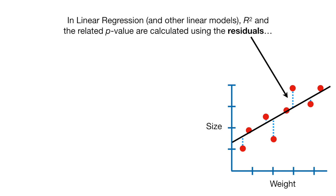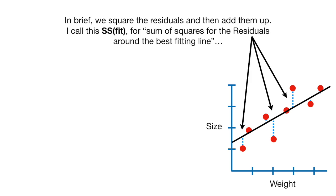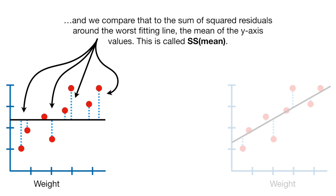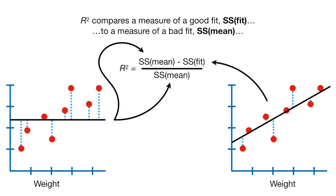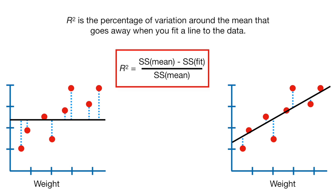In linear regression and other linear models, R squared and the related p-value are calculated using the residuals. In brief, we square the residuals and then add them up. I call this SS fit — for sum of squares of the residuals around the best fitting line. And we compare that to the sum of squared residuals around the worst fitting line, the mean of the y-axis values. This is called SS mean. R squared compares a measure of a good fit, SS fit, to a measure of a bad fit, SS mean.